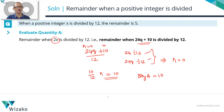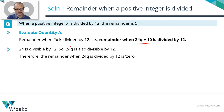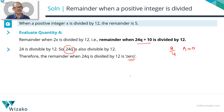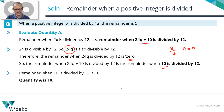To consolidate Quantity A: we found the remainder when 2x — that is, 24q + 10 — is divided by 12. Since 24 is divisible by 12, 24q is divisible by 12 with remainder 0. The remainder when 10 is divided by 12 is 10. So Quantity A equals 10.